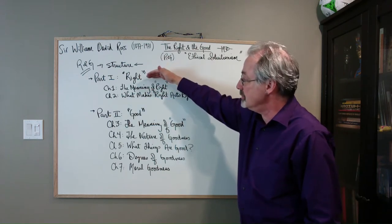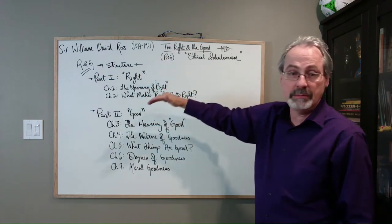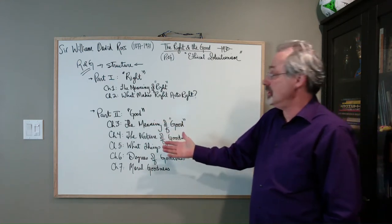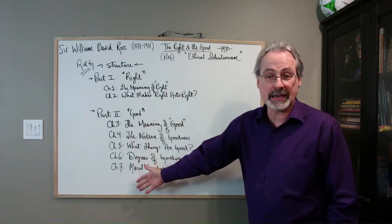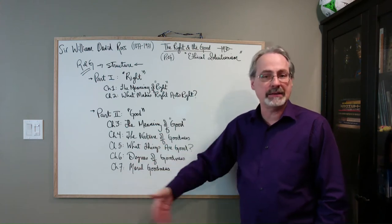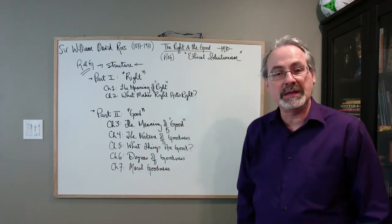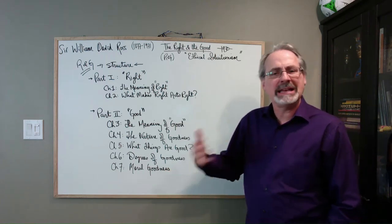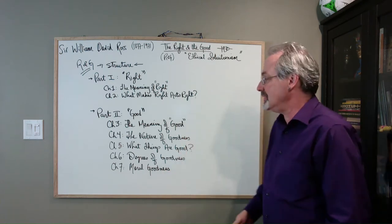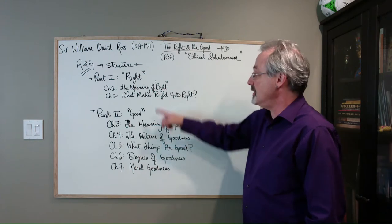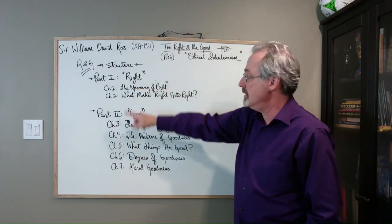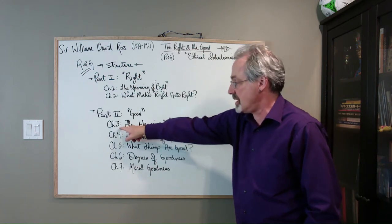And so, not surprisingly, The Right and the Good divides, the text itself divides into two parts. Part one dealing with this concept of right, and part two dealing with this concept of good.